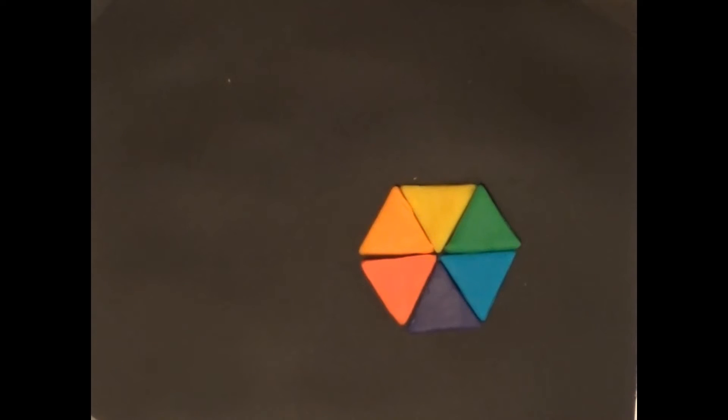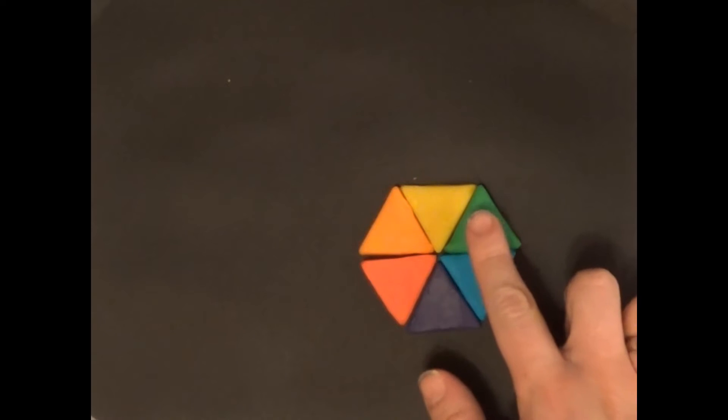The color wheel not only tells us what primary colors to mix to get secondary colors, but it also shows complementary colors. Complementary colors are shown on the color wheel by the opposite color.